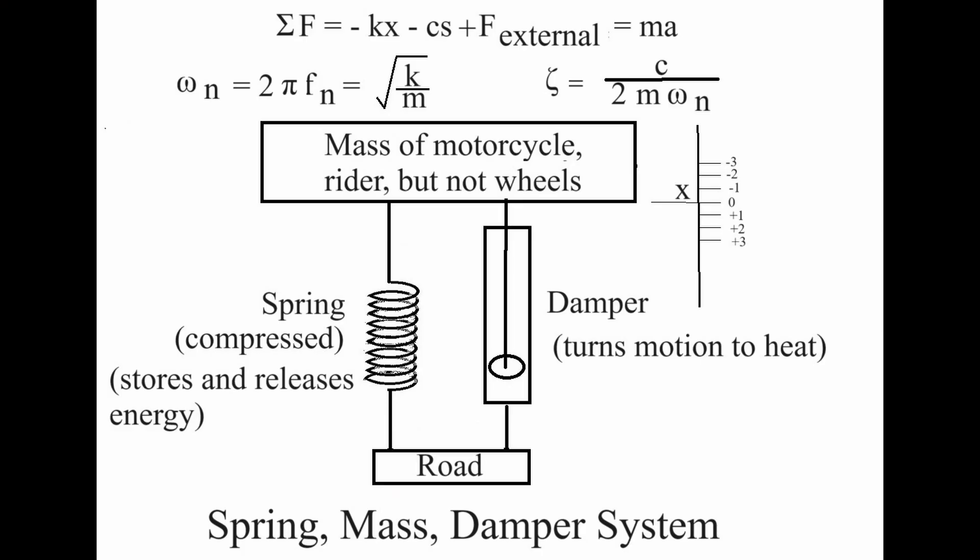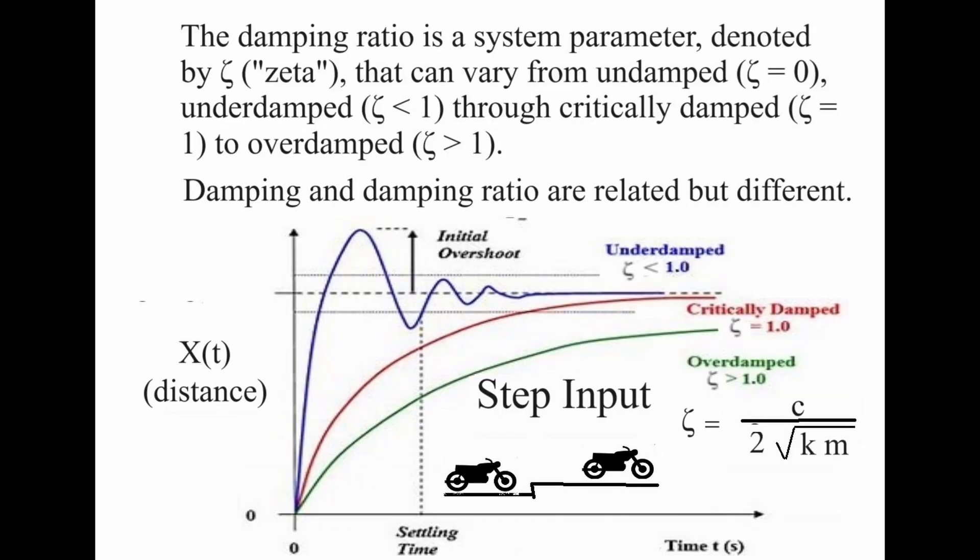Just to remind you where Zeta comes from. Damping ratio has a C in the numerator and a K and M in the denominator.